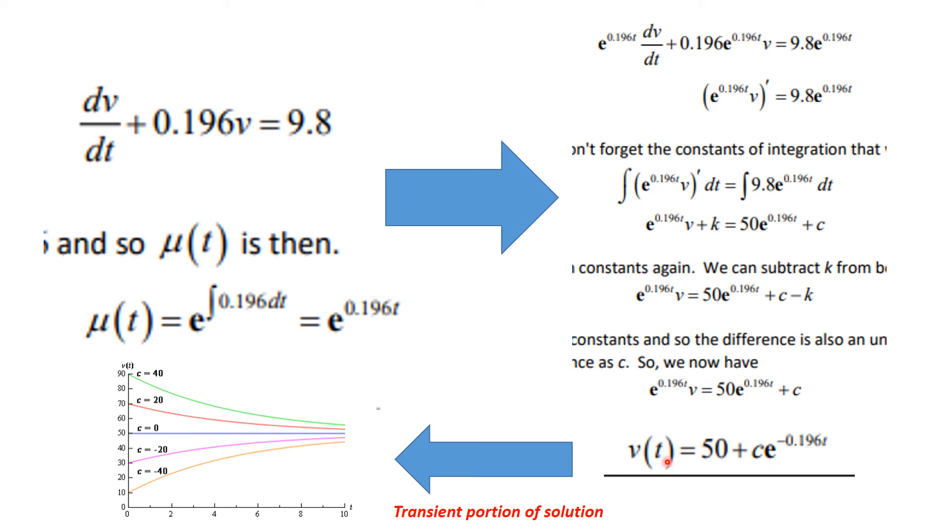Now, for different values of c, you see these are what you get. But this will die off as t becomes greater, and the rate at which it happens will depend on what c is. So, this will go to zero eventually, regardless of what c is. And that is called a transient portion of this solution. And here you see the graphs of that for several values of c.